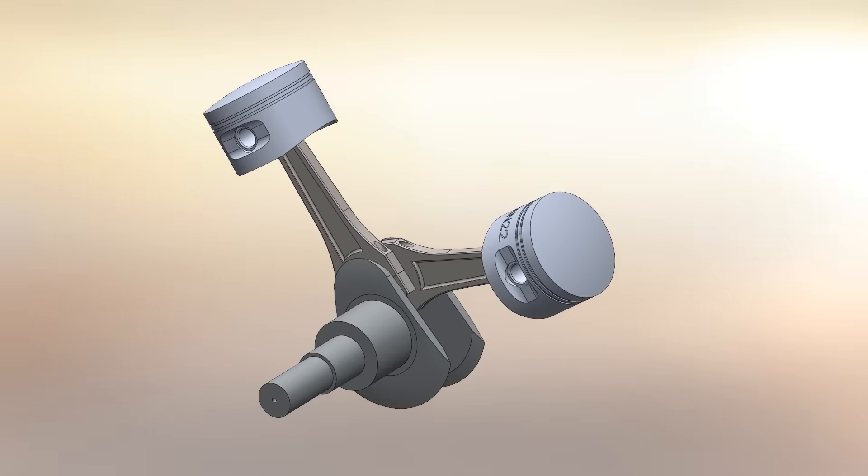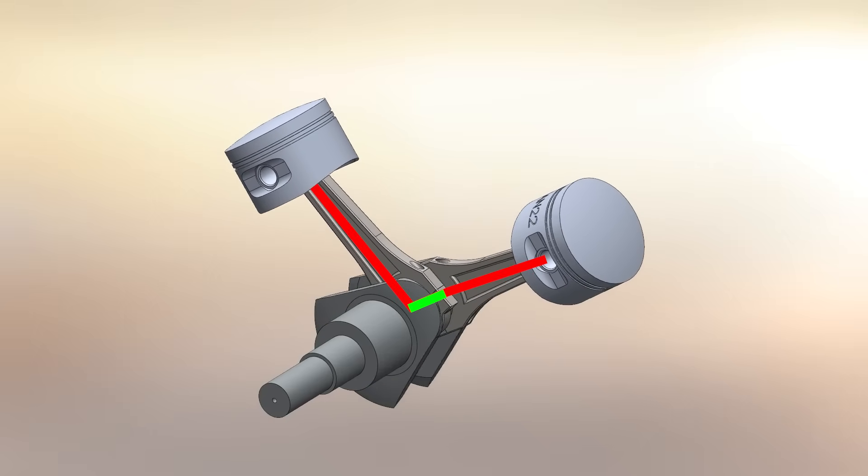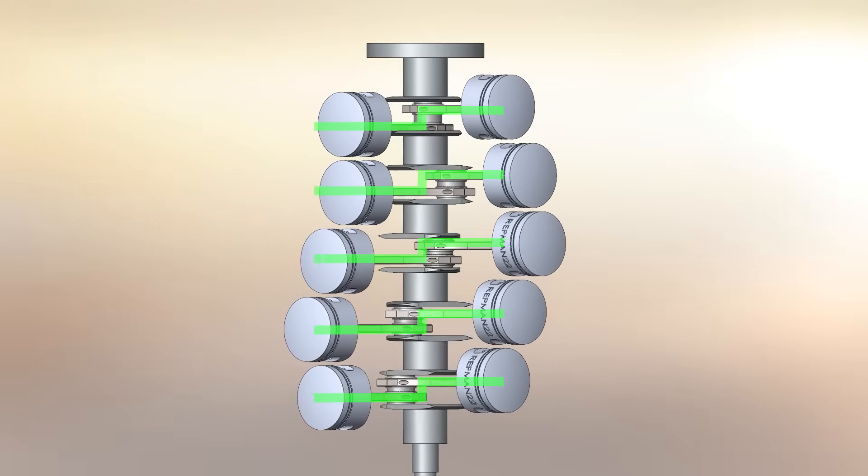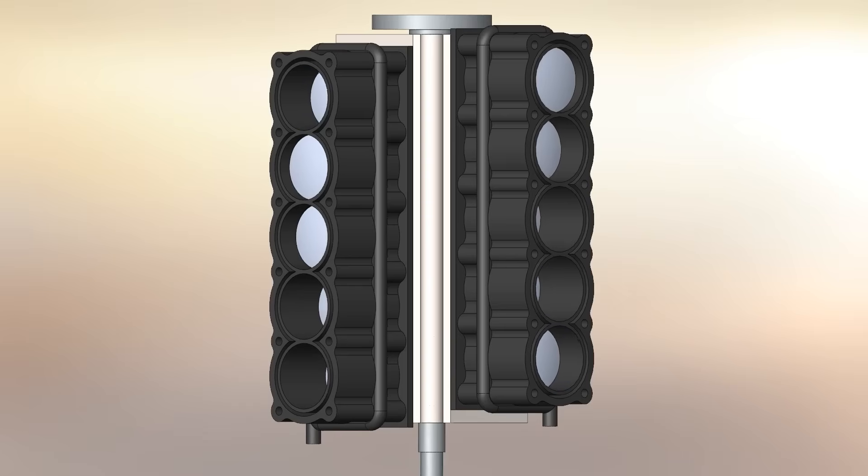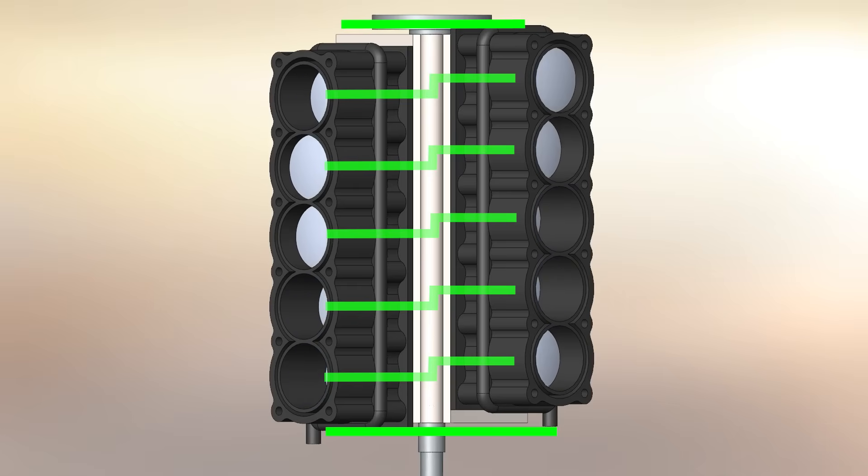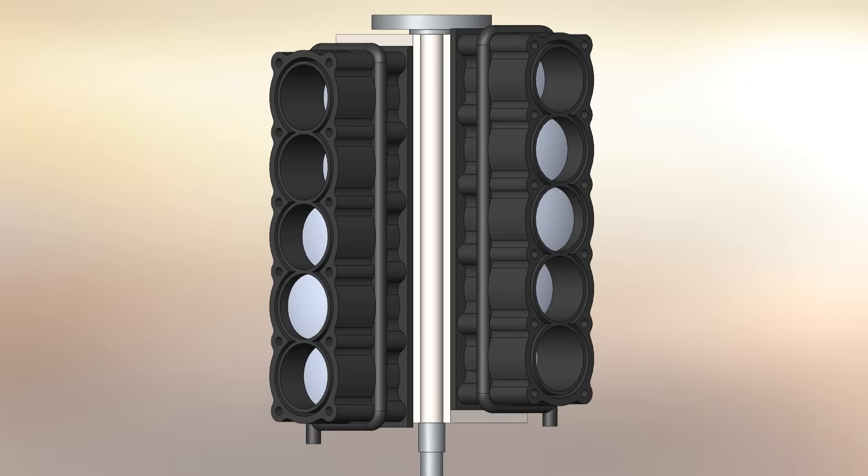In a conventional V engine, rods are side-by-side. This slightly offsets the cylinders and makes the engine longer. Look at any typical V engine. It's not a perfect mirror. It's staggered. This makes the engine longer and takes up more space.